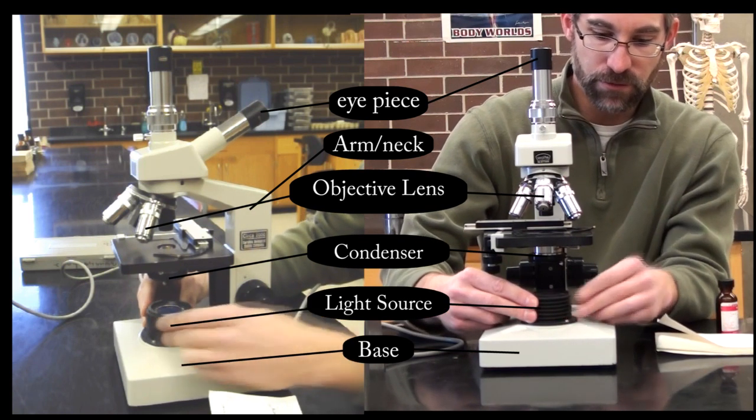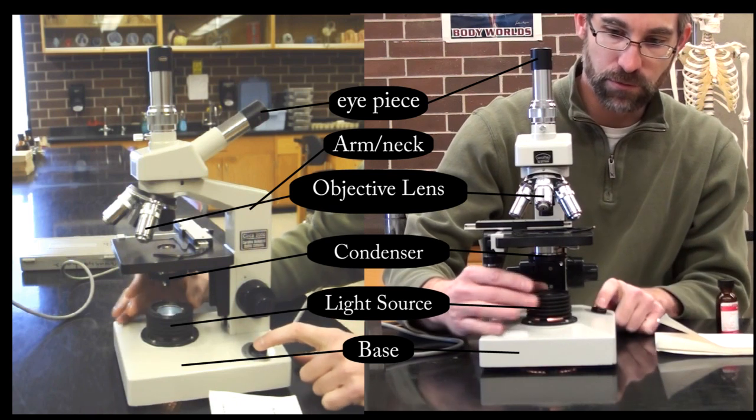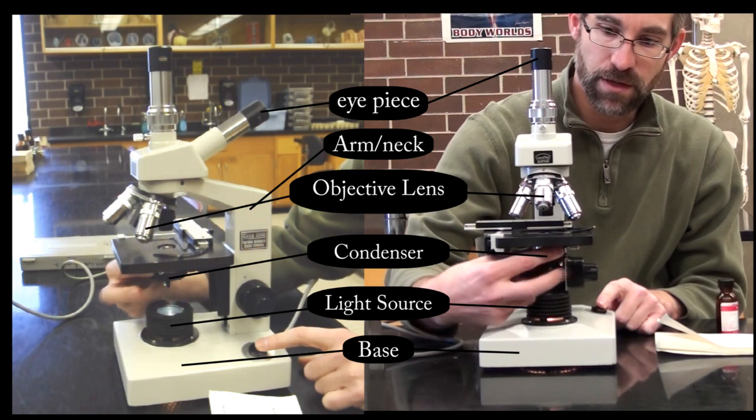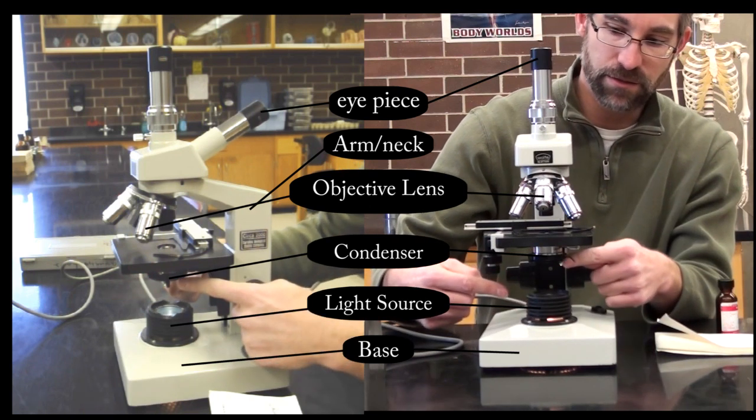We have the light source with a switch right here which will turn it on and off. This light will shoot through a structure down here, which we define as a condenser.